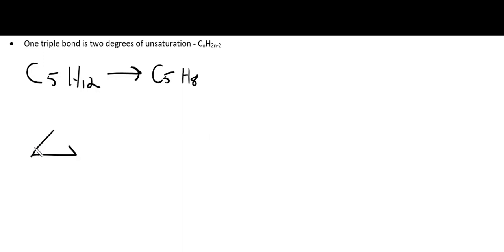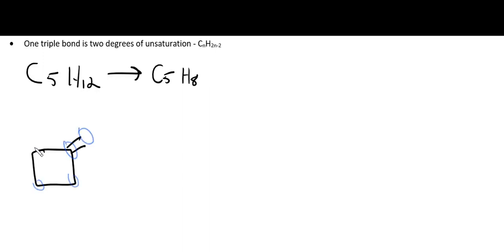Now we'll get creative and include two double bonds. Since there are two degrees of unsaturation, that could come about with two double bonds or two rings if possible. But because we only have 5 carbons, and the smallest ring structure is three-membered, consuming three carbons for one ring leaves only two carbons — so we cannot have two rings for this formula. I'll start with one four-membered ring and include the fifth carbon outside in a double bond configuration: 1, 2, 3, 4, 5 — one ring and one double bond give two degrees of unsaturation.